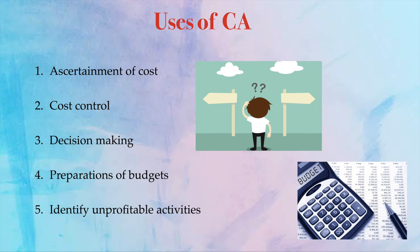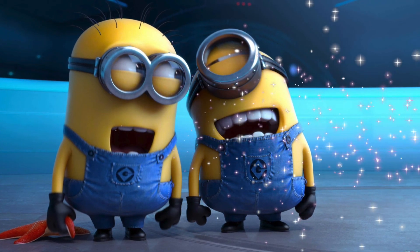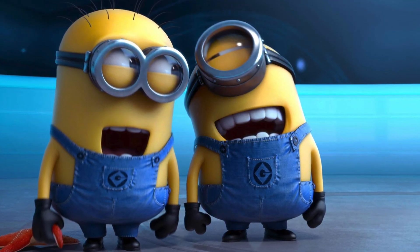Cost accounting also helps to identify unprofitable activities. The earlier a company identifies them, the more resources and time it can save. For example, if I invest in Project A and Project B, and Project B is giving promised returns but Project A only gave returns in the first year and has been incurring losses in the second and third years, then Project A is unprofitable and Project B is profitable. I need to quickly identify which activity or project is unprofitable.